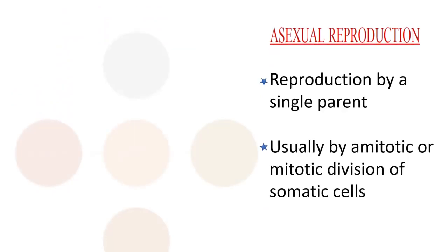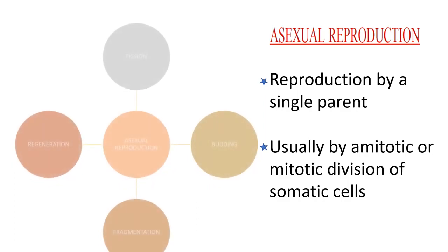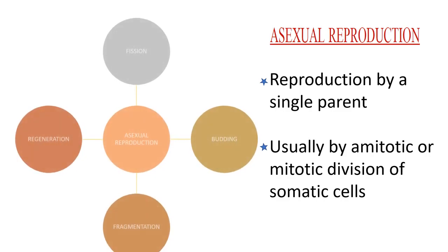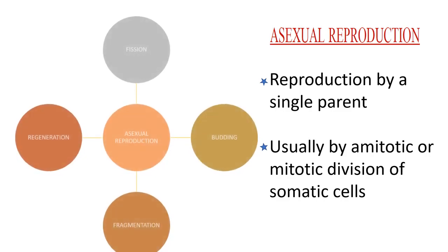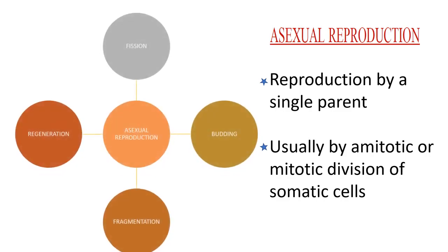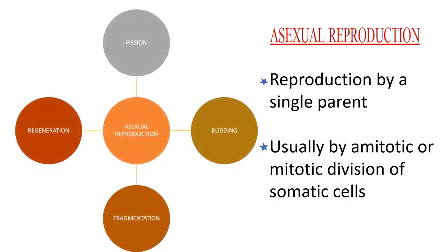Reproduction is a fundamental feature of all living organisms. Organisms exhibit two major modes of reproduction: asexual and sexual reproduction. Asexual reproduction involves a single parent and usually takes place by amitotic or mitotic division.